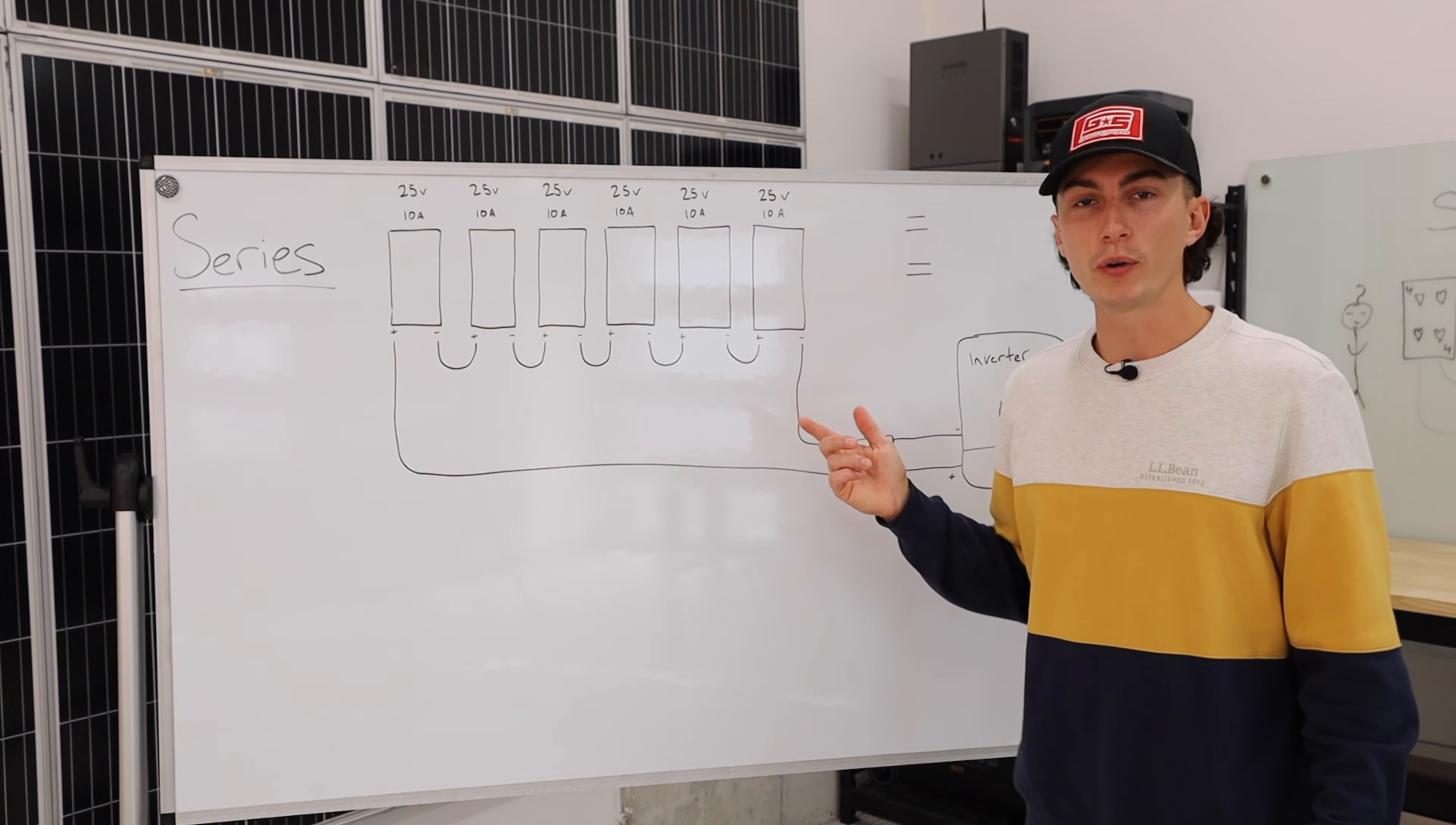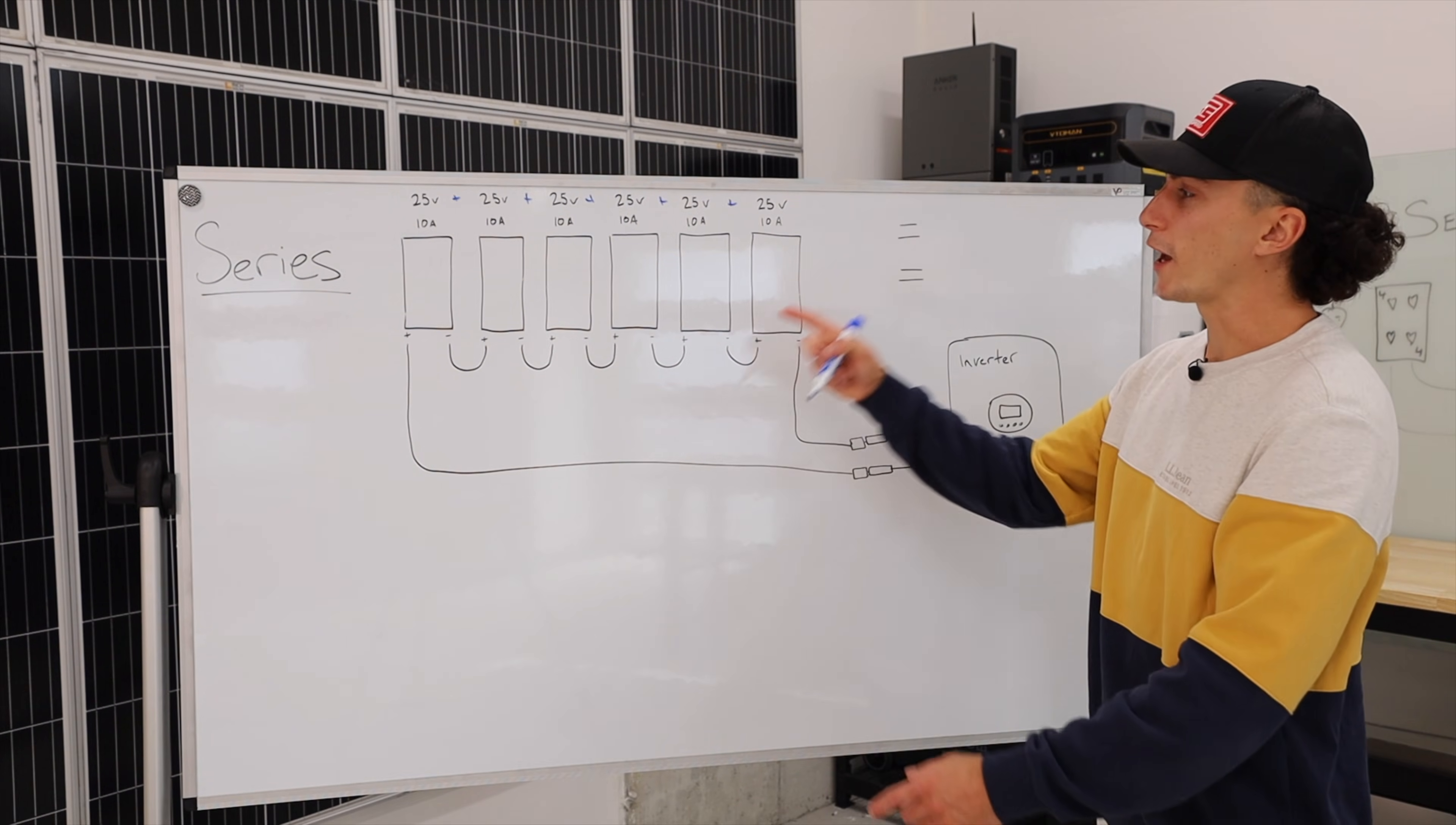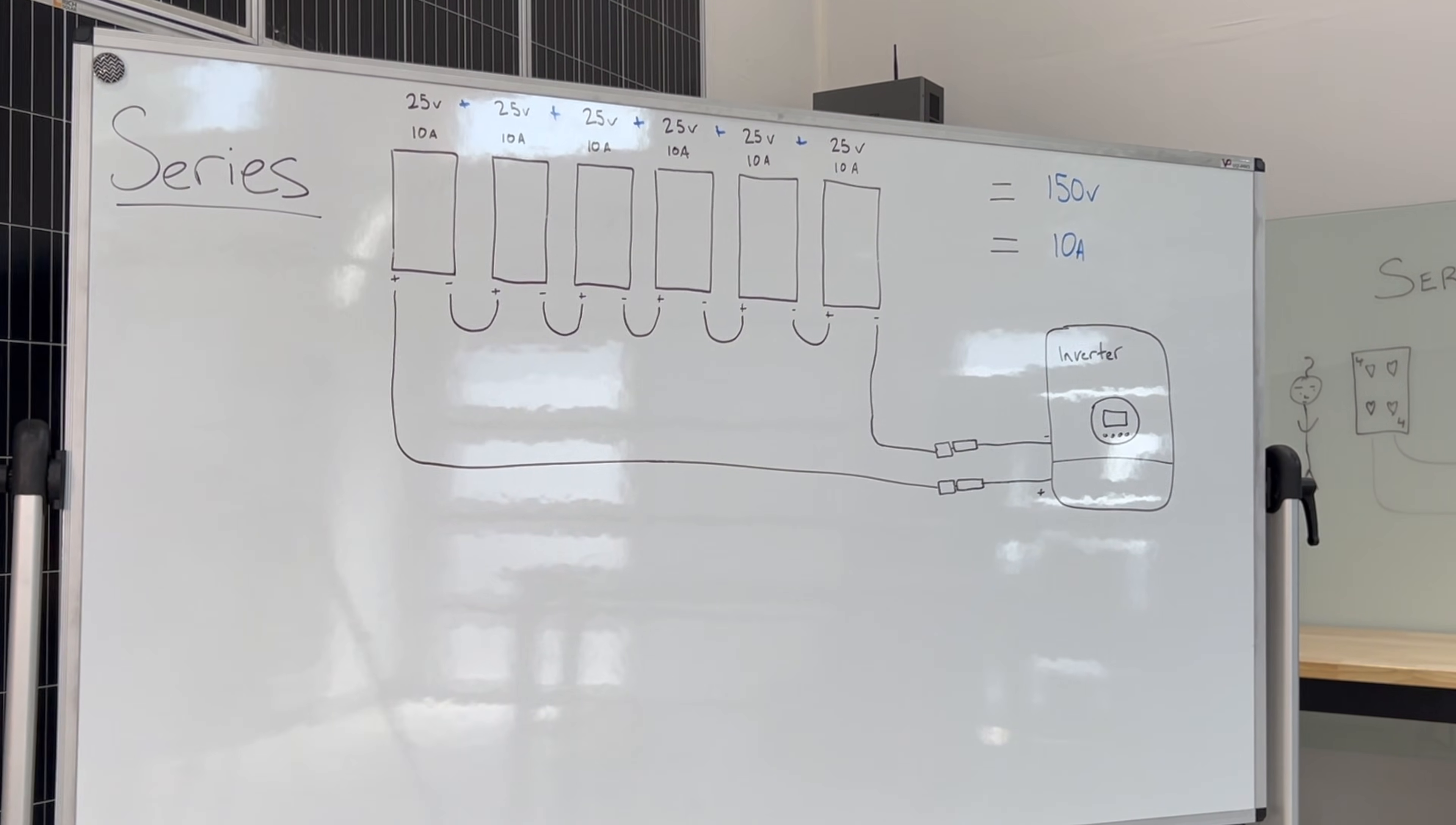The most important thing when you're wiring something in series to remember is that you add the volts and the amps stay the same. In this example, the output of these six 200-watt panels in this array would be 150 volts and still only 10 amps, because the amps didn't go up.